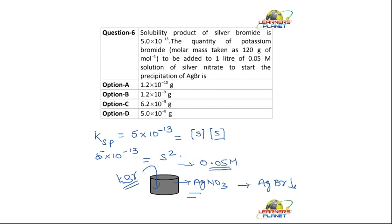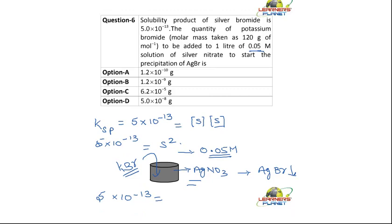We know the solubility product. What we want to know is how much silver is being added. We are adding silver nitrate at 0.05 molar. So Ksp of AgBr = 5×10⁻¹³ equals the concentration of silver multiplied by the concentration of bromide. The silver concentration is 0.05.